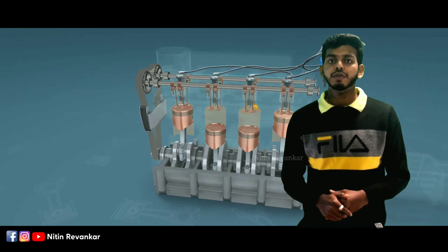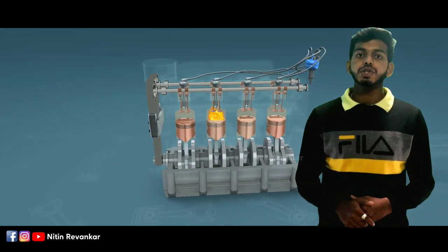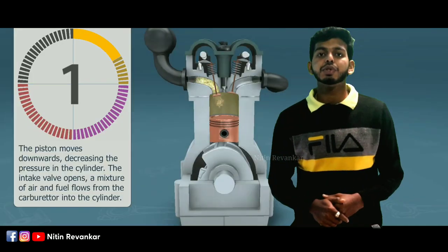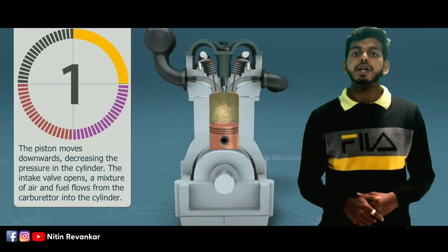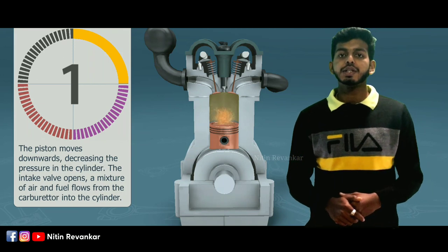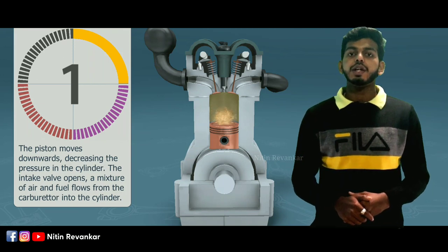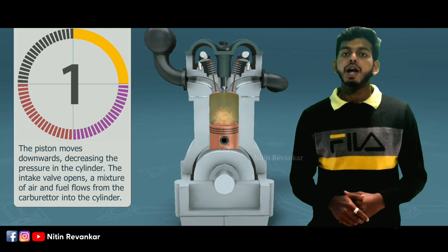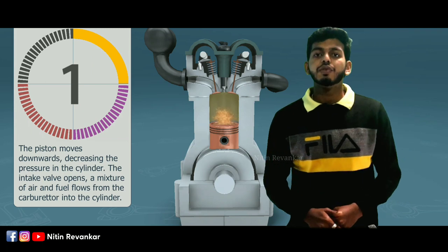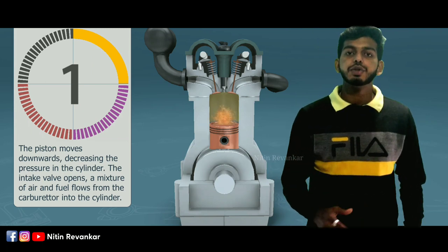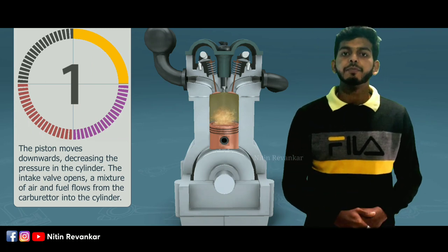We will talk about the strokes. The first stroke is intake. The piston moves downward, decreasing the pressure in the cylinder. The intake valve opens and a mixture of air and fuel flows from the carburetor into the cylinder.